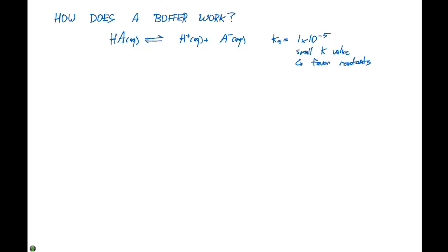Okay, so we're not going very far forward here. Our Ka expression can be written as H⁺, the concentration of H⁺ times the concentration of A⁻, divided by the concentration of HA.